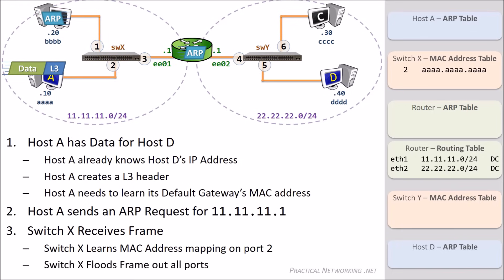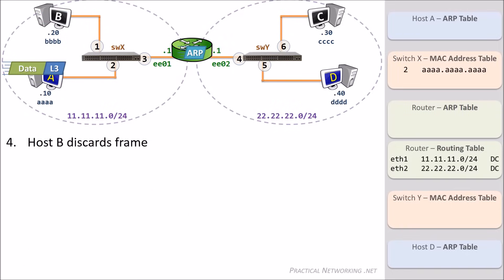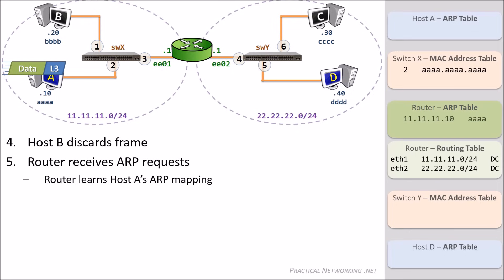When Host B gets the frame, it will take a look and realize that the request is for someone else's IP address, so it will simply discard it without taking any action. When the router gets the ARP request, it will take a look and realize that the request is for its own IP address. The router will therefore accept and process the ARP request. First, the router will learn the ARP mapping of the device who sent it — Host A. The router will populate its ARP table with a mapping of the IP address 11.11.11.10 to the MAC address AAAA.